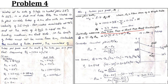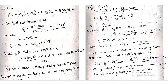Find θ_m treating the heat exchanger as counter flow. First, find Th2 (hot fluid outlet) using energy balance; all other values are known. Then calculate θ1, θ2, and θ_m, which gives 30.72°C.